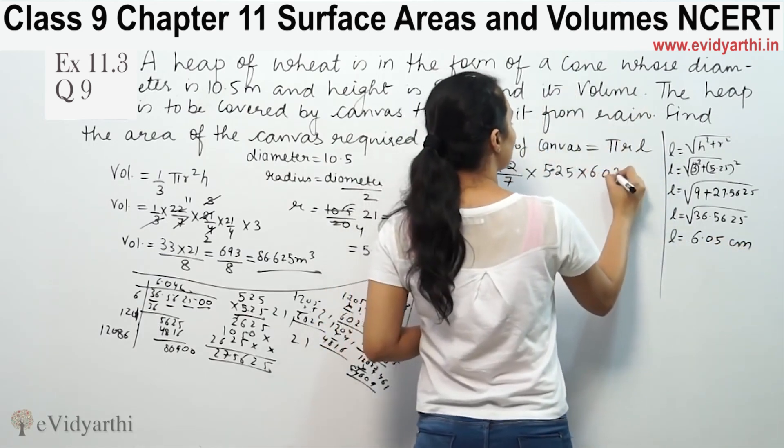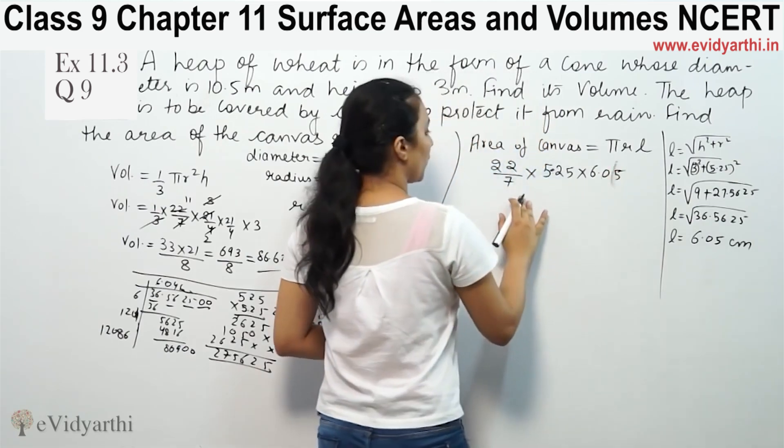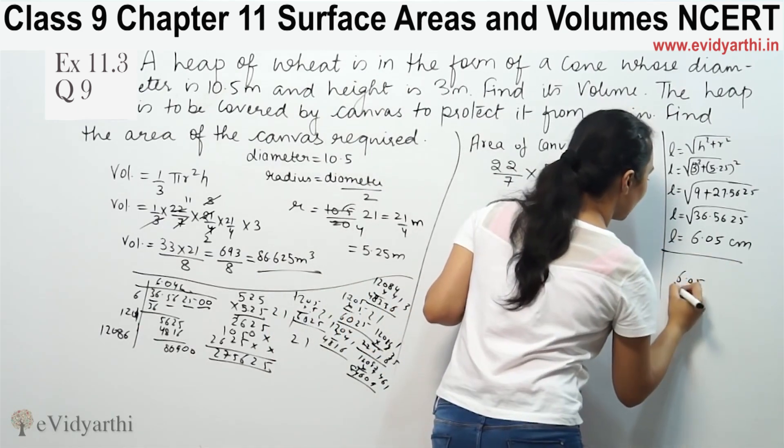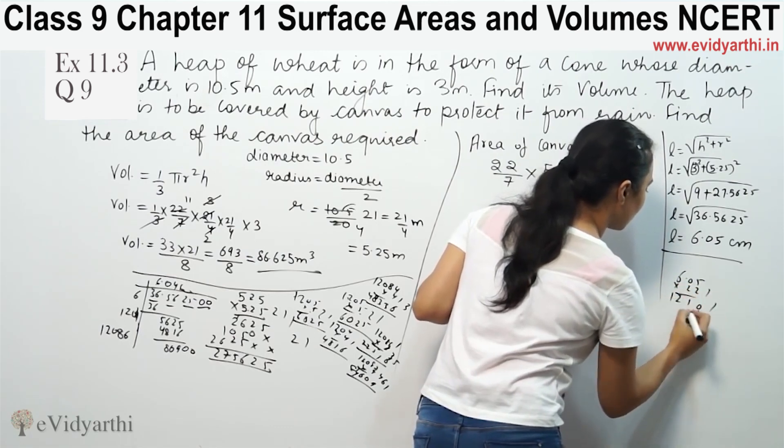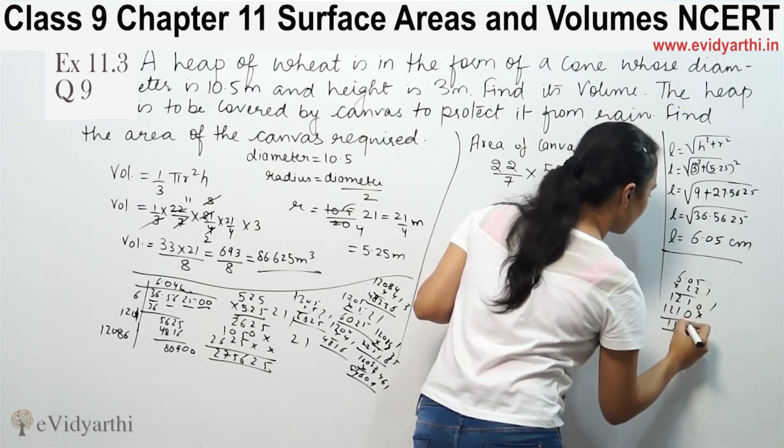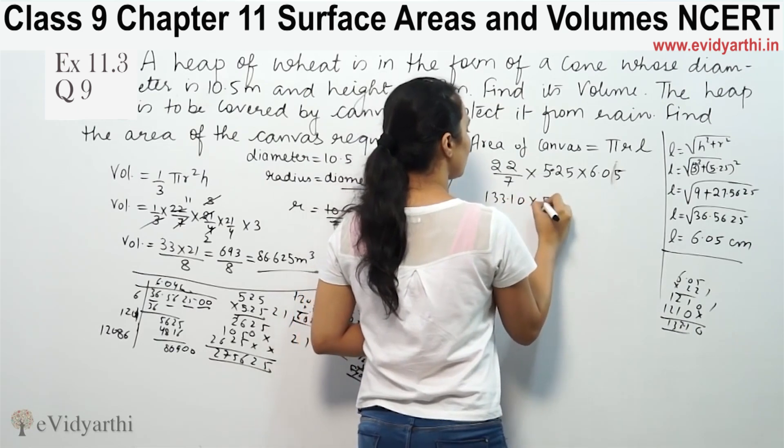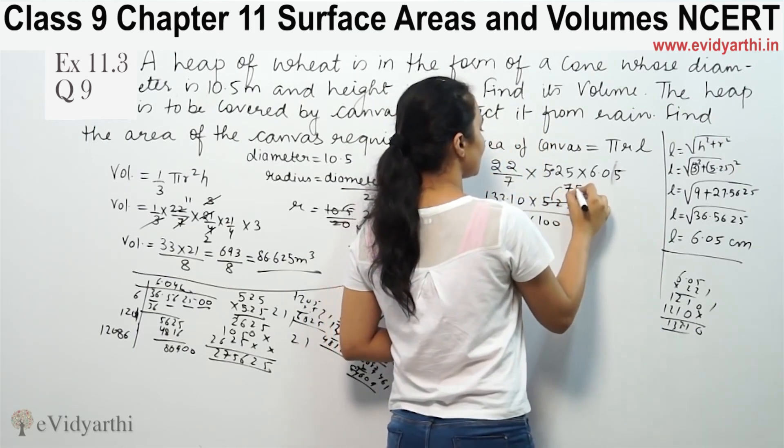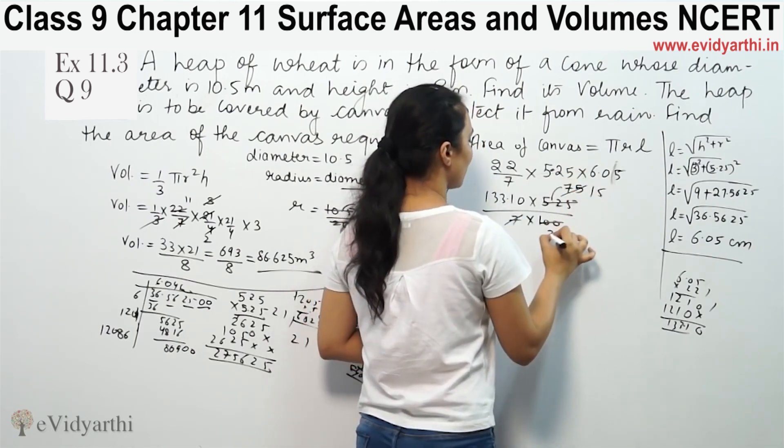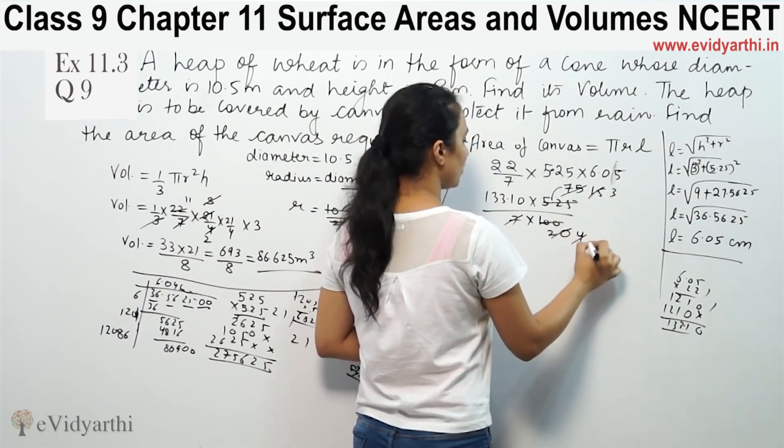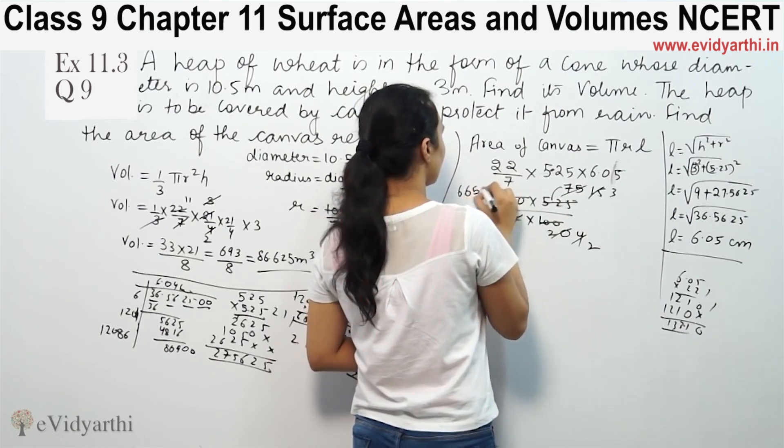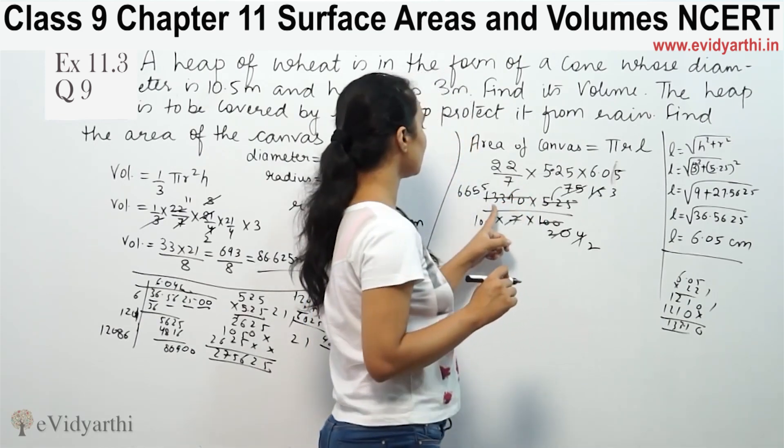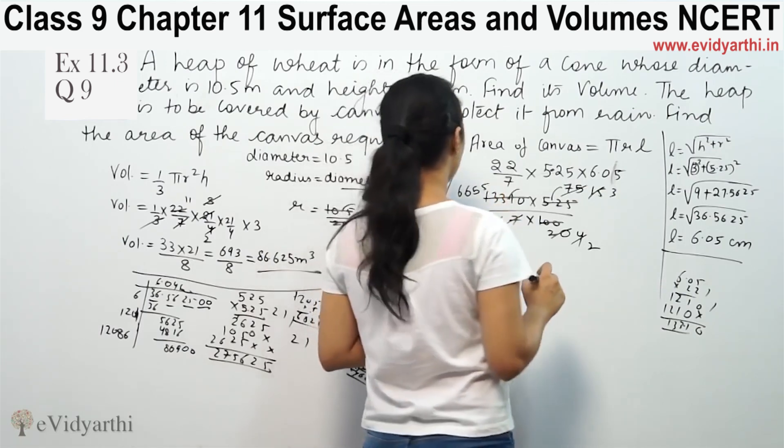So length is 6.05. Now we substitute this: 22/7 into 5.25 into 6.05. This becomes 22 into 5.25 by 7. Removing decimals, we get 22 into 525 by 700, which simplifies to 11 into 525 by 350.